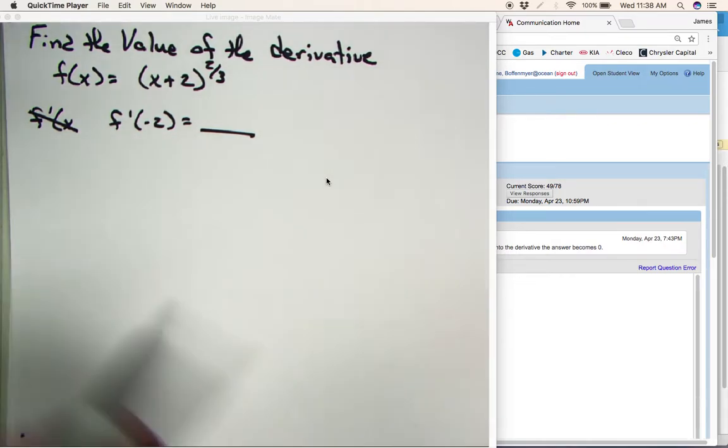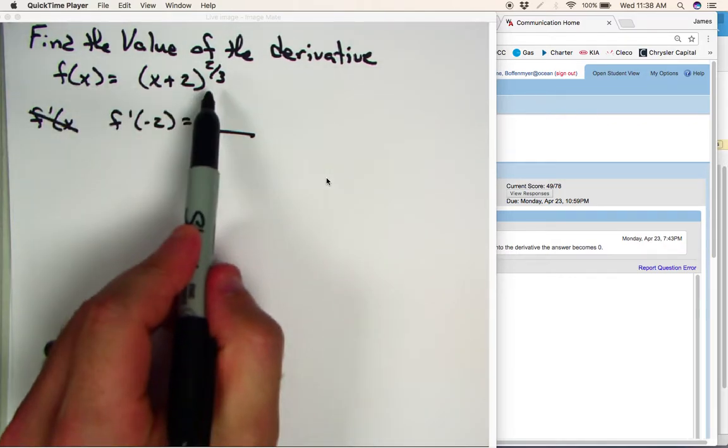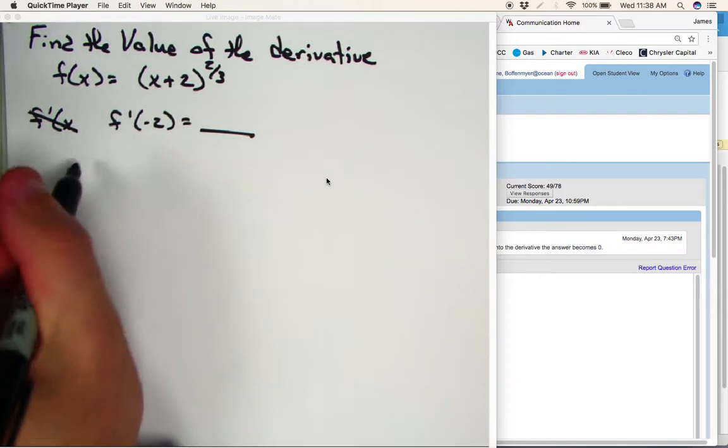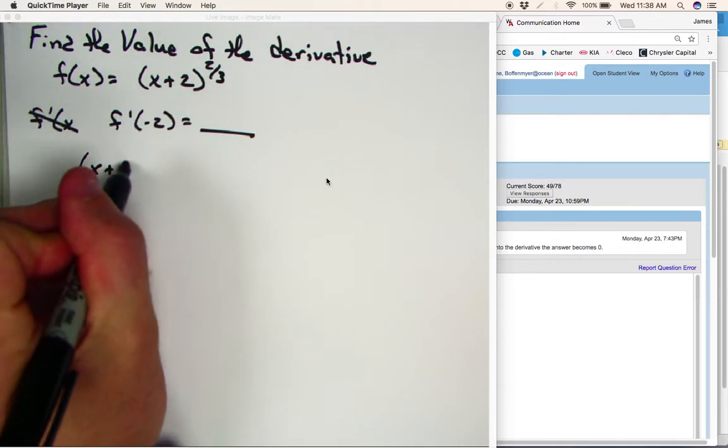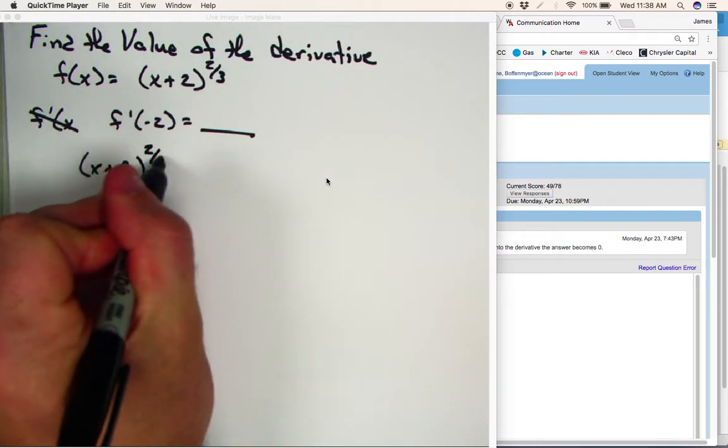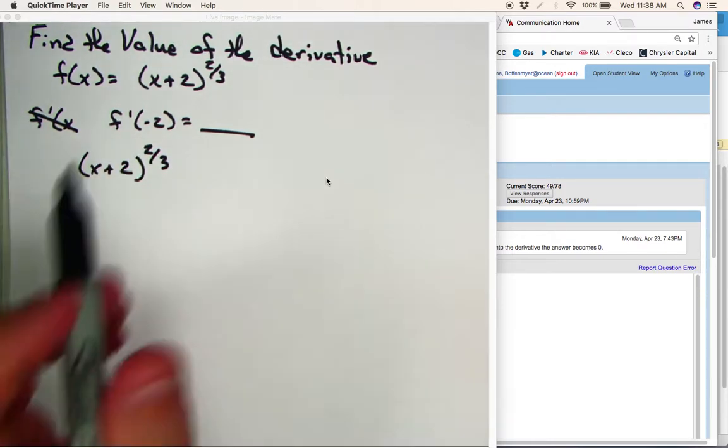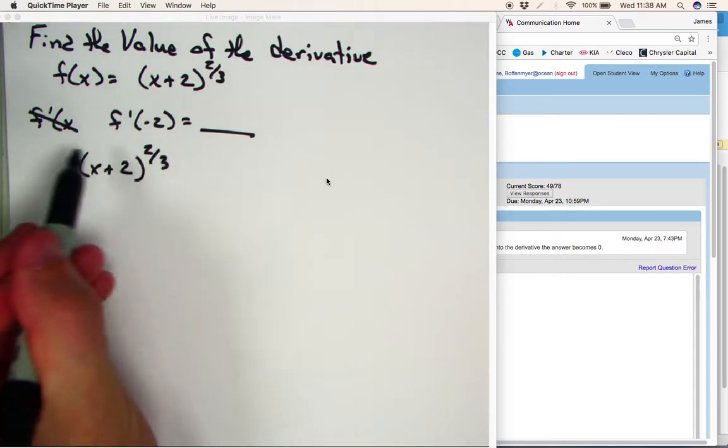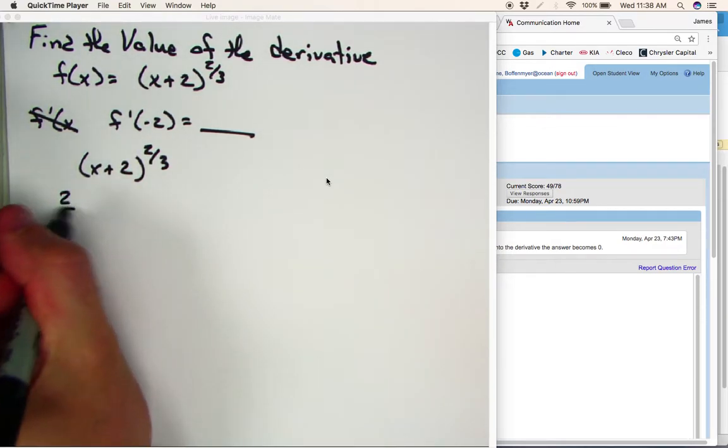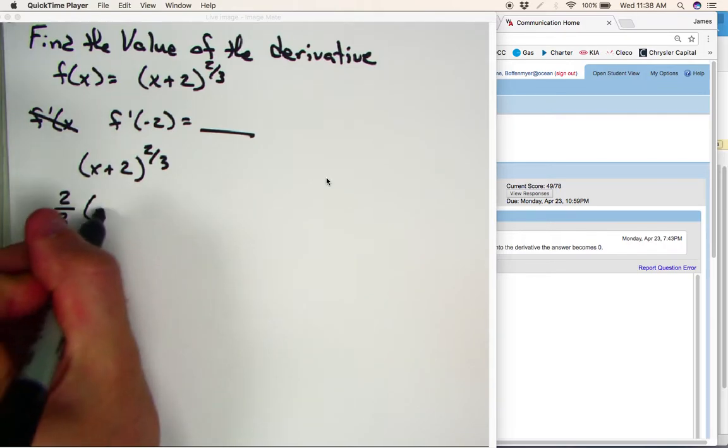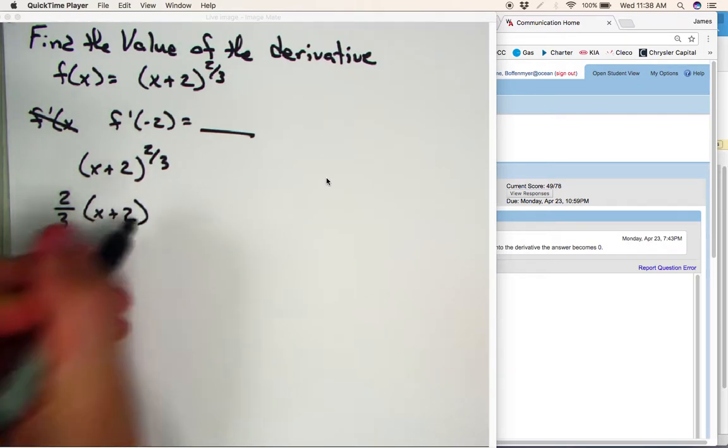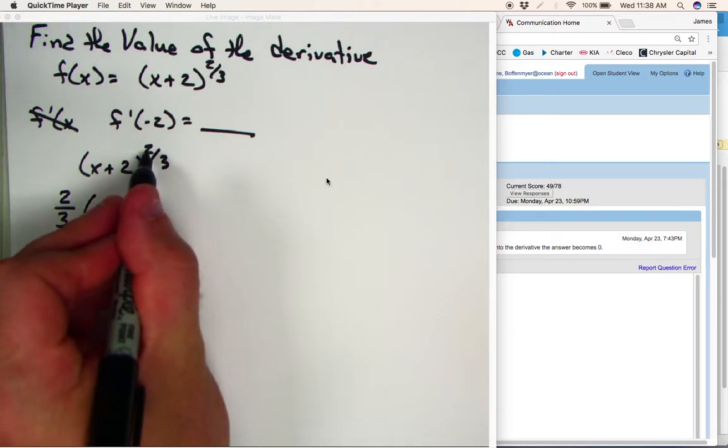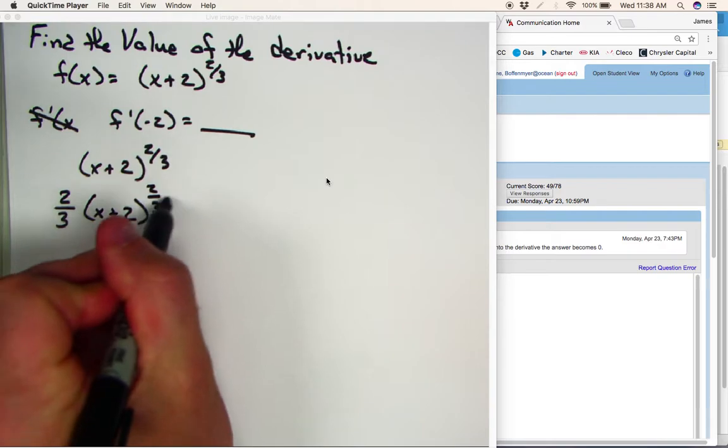So the first thing we have to do, we have to take our original function, f of x equals x plus 2 raised to the 2 thirds, and we have to find the derivative of that. So I'm going to write the function down here. Now, when we find the derivative, we use the power rule for the derivative. In other words, the 2 thirds comes down to the front, and then what we have to do, we have to take the 2 thirds and subtract 1 from it.